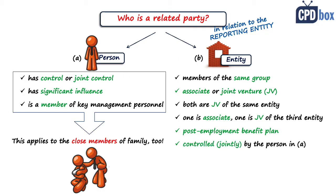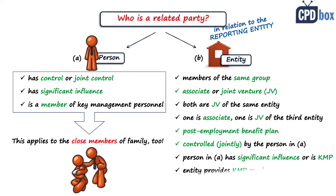Next, the entity is controlled or jointly controlled by a person identified in category A — that is, owners, key management personnel, or their family members. Next, a person in category A has significant influence over the entity or is a member of key management personnel of the entity or of a parent of the entity. Finally, the entity or any member of its group provides key management personnel services to the reporting entity — meaning not only persons but also entities can act as key management personnel.